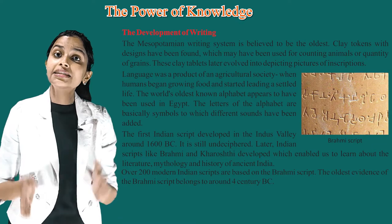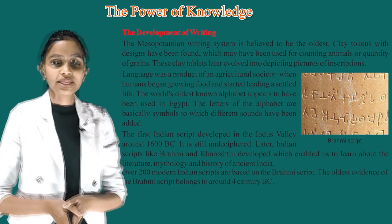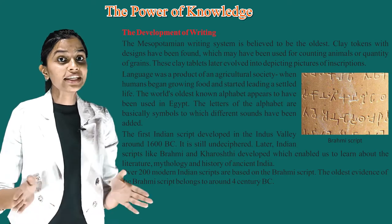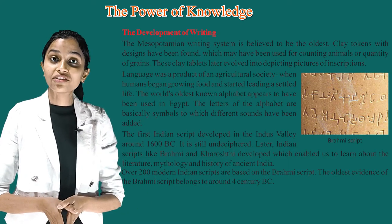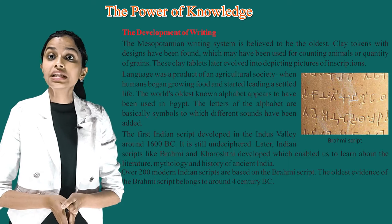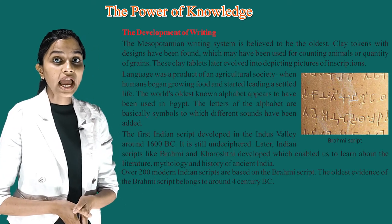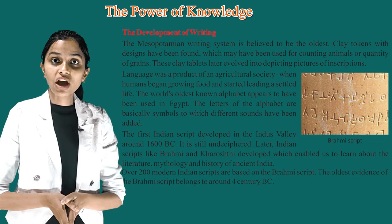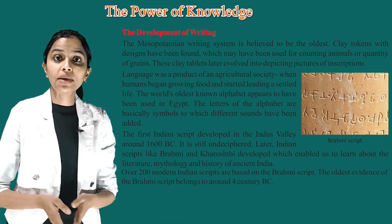The world's oldest known alphabet appears to have been used in Egypt. The letters of the alphabet are basically symbols to which different sounds have been added. The first Indian script developed in the Indus Valley around 1600 BC; it is still undeciphered.